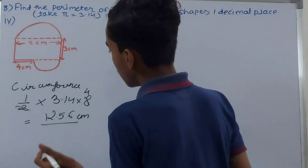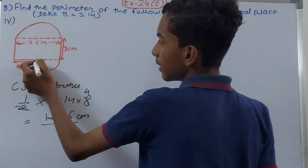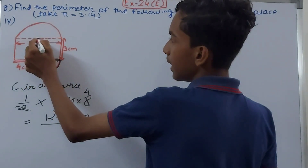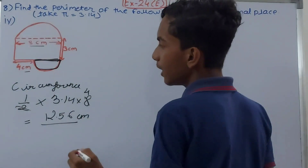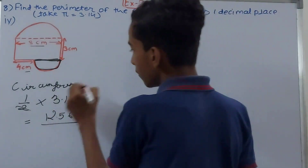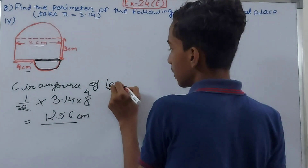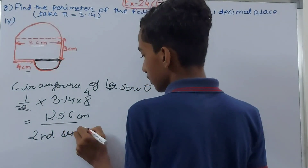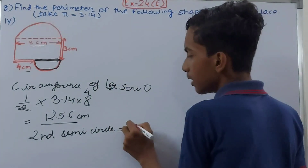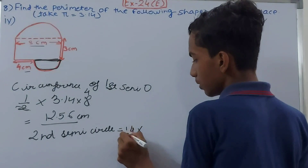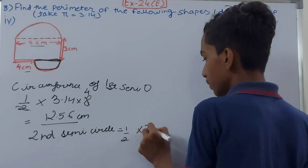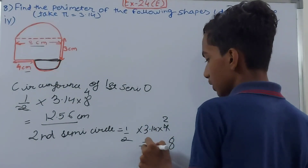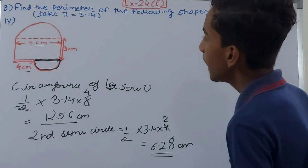The second semicircle has a smaller diameter: 8 minus 4 = 4 centimeters. Its circumference = 1/2 × 3.14 × 4 = 6.28 centimeters.